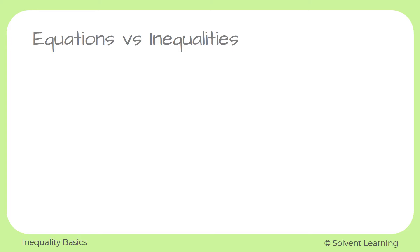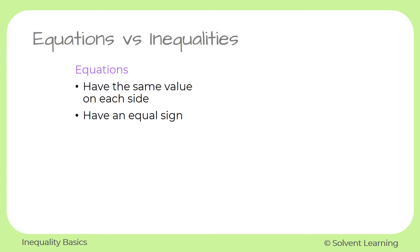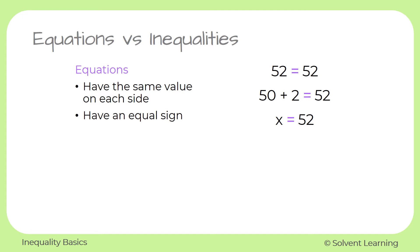What's the difference between an equation and an inequality? With equations, there's the same value on each side of that equation, and we can recognize equations because they have an equal sign. For example, 52 equals 52 — we see the equal sign in the middle, and both sides have the same value. Even if the left side says 50 plus 2, that still has a value of 52. We can also see variables in our equations; this equation says x equals 52, so it's telling us that x is 52.